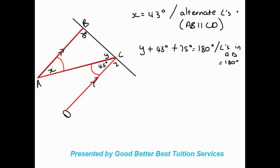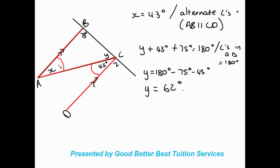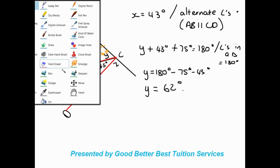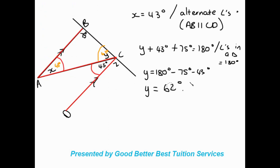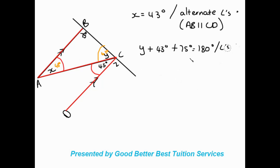The reason is angles in a triangle equal 180 degrees. Then we make y the subject: it's 180 degrees minus 75 degrees minus 43 degrees, so y is equal to 62 degrees. So x equals 43 degrees and y equals 62 degrees. Now I'll show you the other way we could have worked out y — just erasing this method. The other approach also uses the law that all angles in the triangle equal 180 degrees.